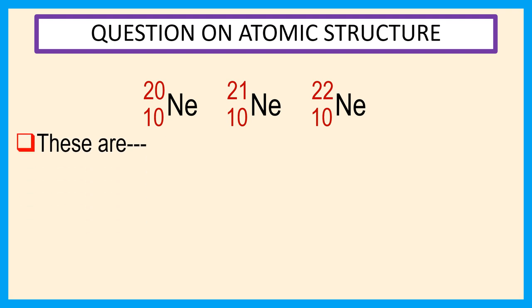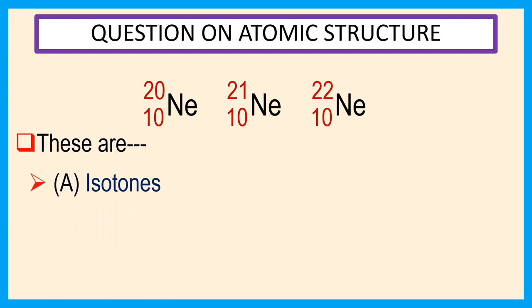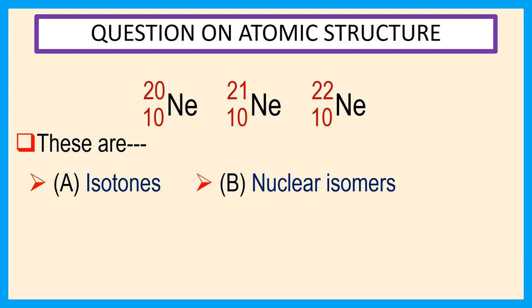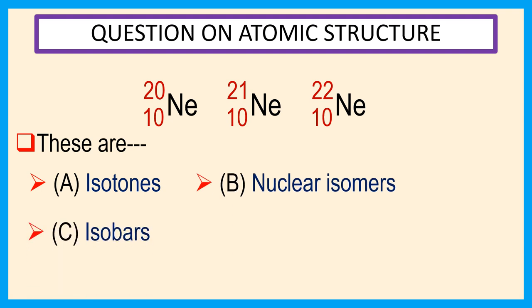These are the choices: a) isotones, b) nuclear isomers, c) isobars, d) isotopes.